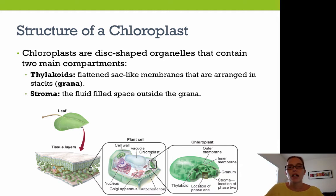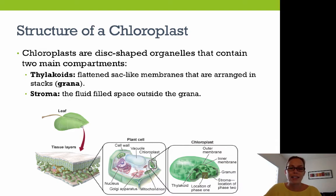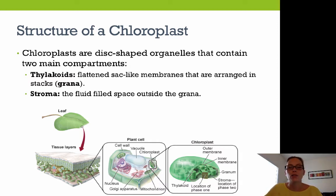The chloroplasts are disc-shaped organelles that contain two main parts: the thylakoids — flattened sac-like membranes arranged in stacks called grana — and the stroma, which is the fluid-filled space outside the grana.